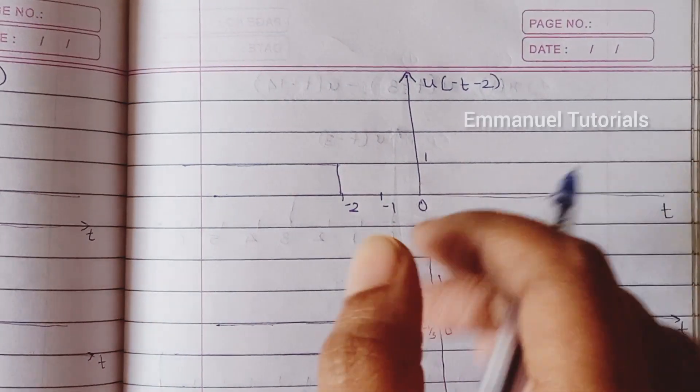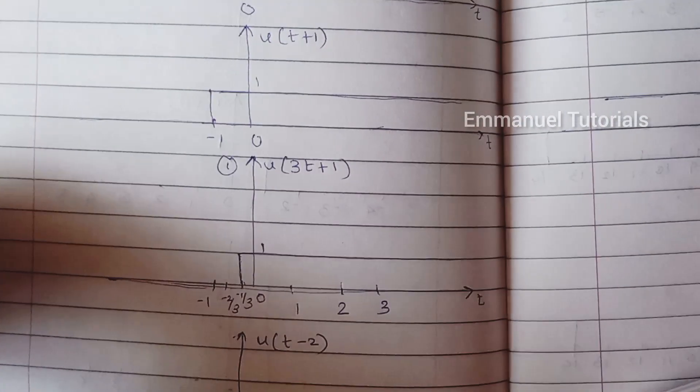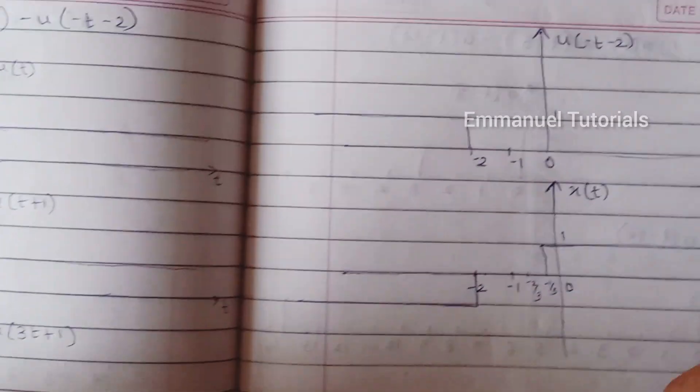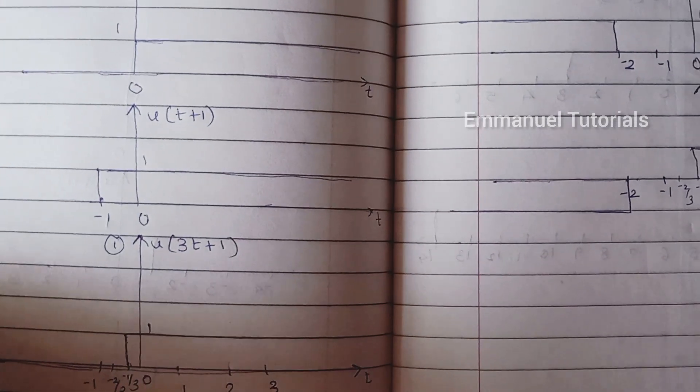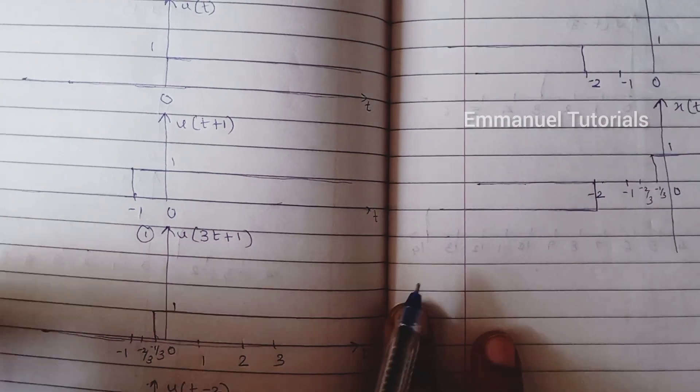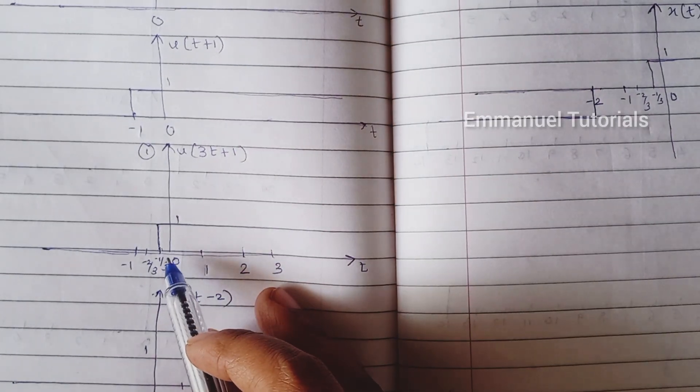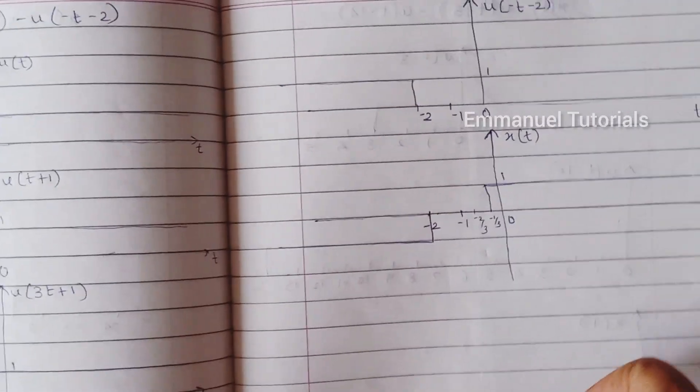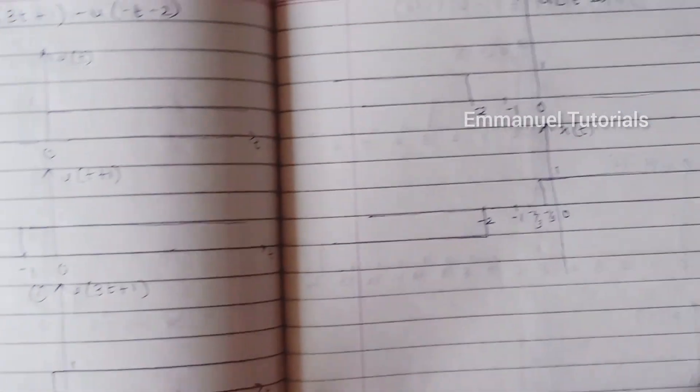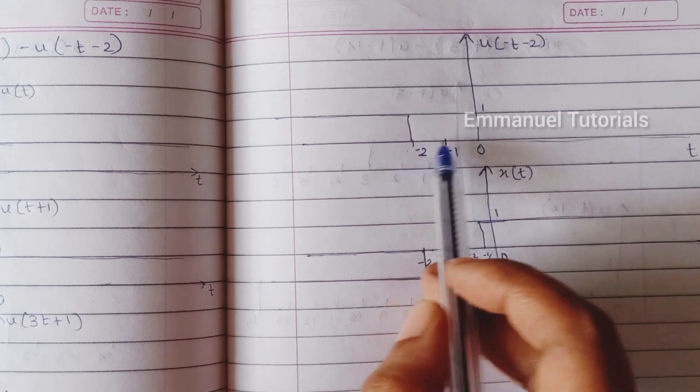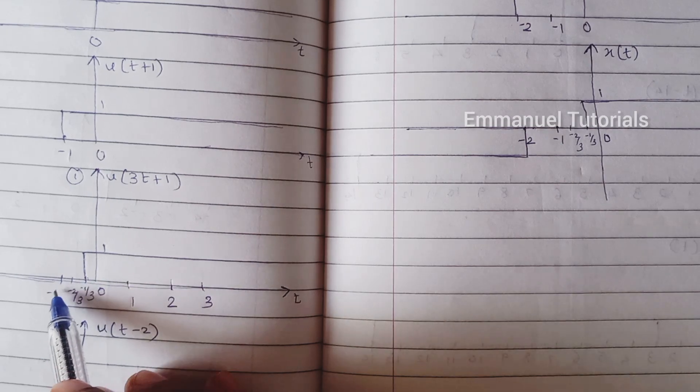Now what we need to do is we have to subtract the u of minus t minus 2 from u of 3t plus 1 signal that we have. Now what we can see is that if you just compare both these signals, the first signal starts from minus 1 by 3, second signal starts from minus infinity. First signal goes up to infinity and second signal goes up to minus 2, and in between there is a space where we have the signal's value or amplitude as 0.